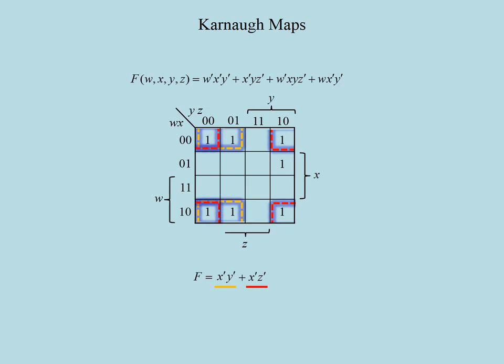Finally, to include the remaining cell in the function, we can combine it with its neighbor so as to eliminate the x literal and write a term of w prime·y·z prime. This example showed us that adjacencies for the squares at the edges of the map should be sought also at the opposite edges. In other words, we should visualize the map more like a flat open cylinder in the horizontal as well as in the vertical direction.